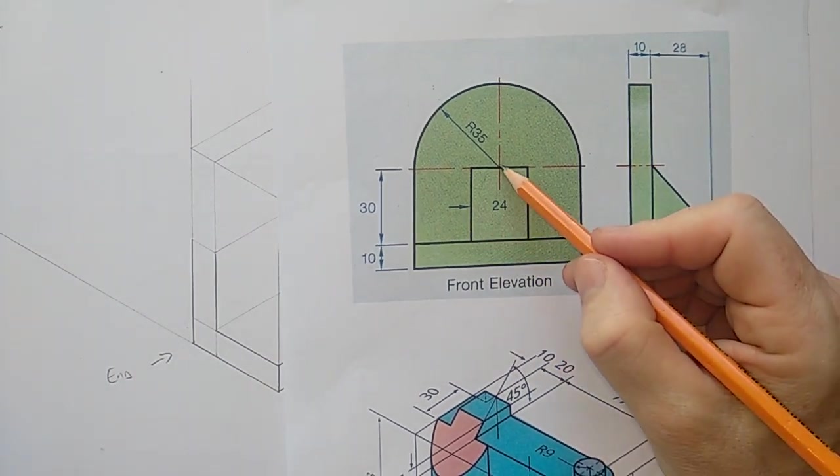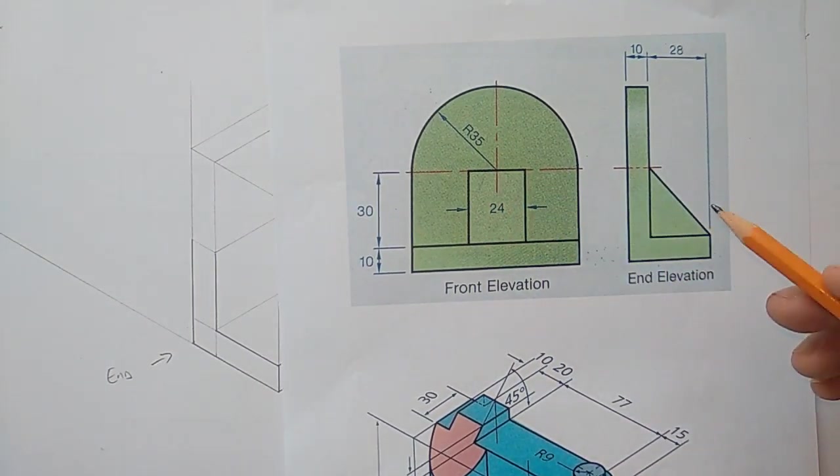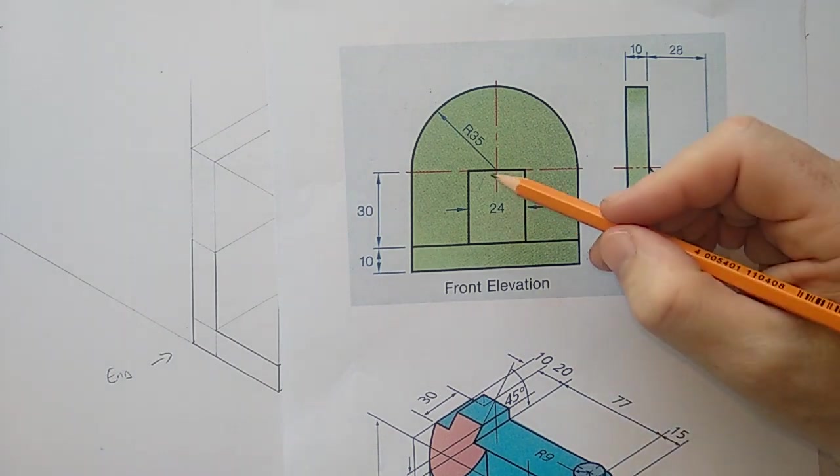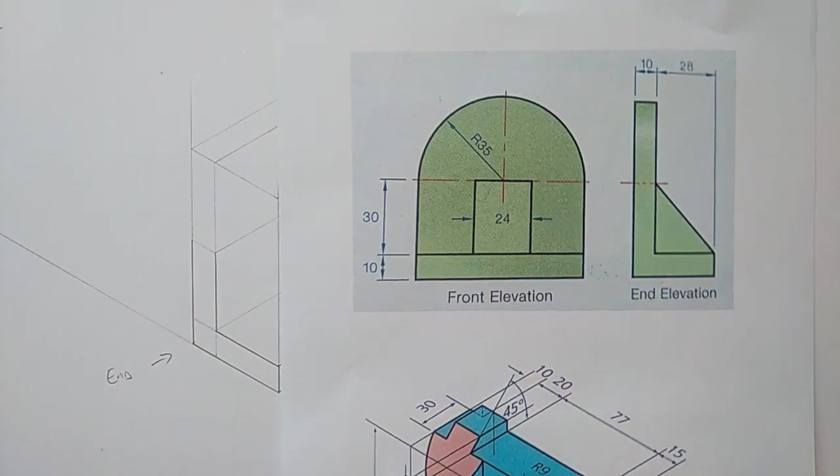It's 24 wide, and it's evenly spaced. So 12 off the center on each side. And it just comes from the center line here to the front. So that's not too bad, really.